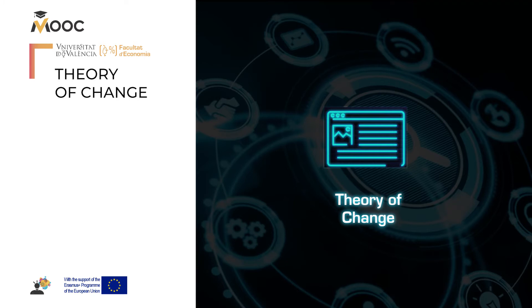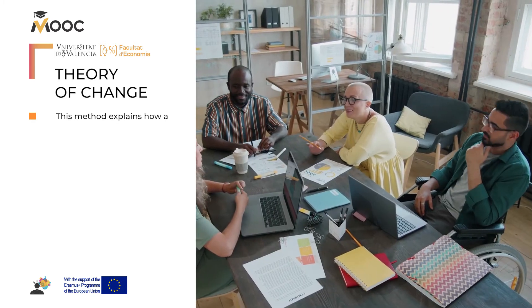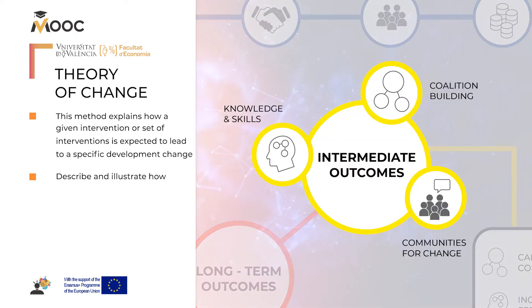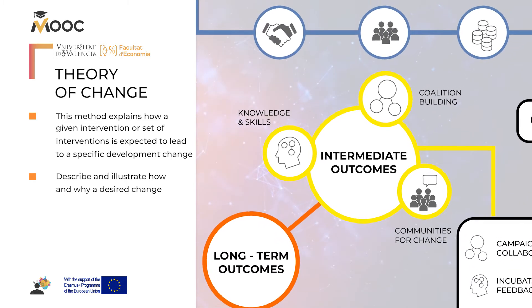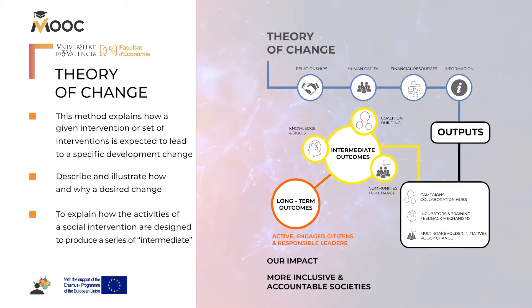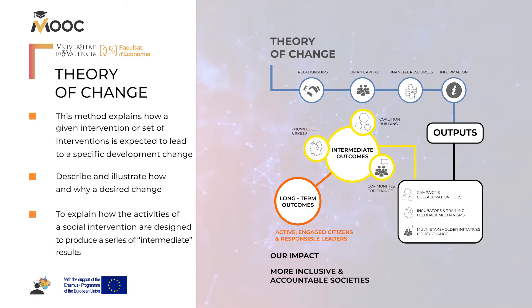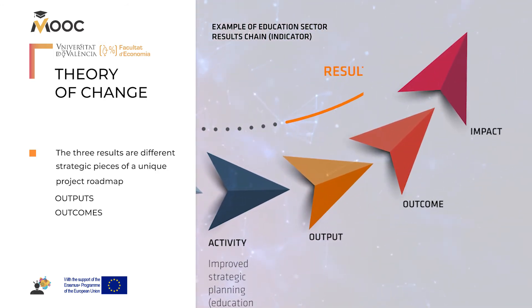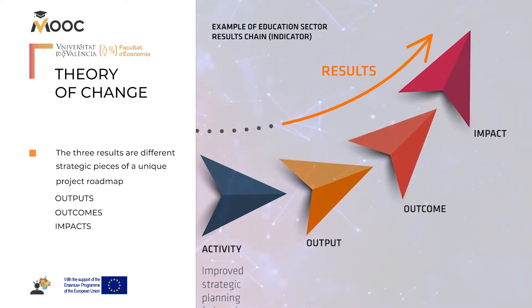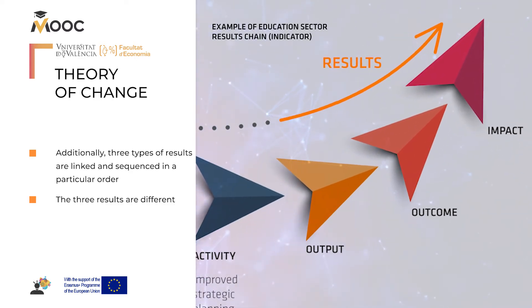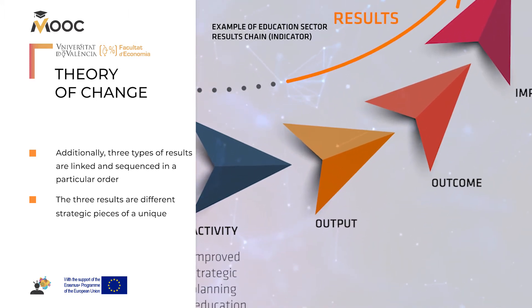We will now address the theory of change. This method explains how a given intervention or set of interventions is expected to lead to a specific development change. It helps to describe and illustrate how and why a desired change is expected to happen in a given context. It aims to explain how the activities of a social intervention are designed to produce a series of intermediate results that contribute to achieve the final intended impacts. The theory of change states that the term results is used to include outputs, outcomes and impacts, where impacts are the final outcomes affecting well-being. Additionally, three types of results are linked and sequenced in a particular order, as different strategic pieces of a unique project roadmap.